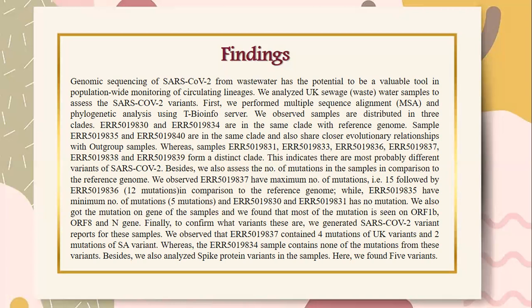This indicates there are most probably different variants of SARS-CoV-2. We also assessed the number of mutations in the samples compared to the reference genome. ERR5019837 has the maximum number of mutations — 15 — followed by ERR5019836 with 12 mutations. Sample ERR5019835 has the minimum number of mutations at 5, while ERR5019830 and ERR5019831 have no mutations. We also found that most mutations are seen on ORF1B, ORF8, and the N gene.